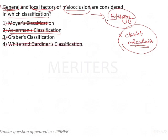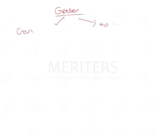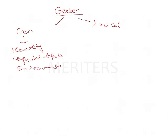The answer is Graeber's classification. Graeber was the one who classified the etiology of malocclusion as general factors and local factors. Under general factors, many of the factors overlap with Moyers' classification, such as heredity, congenital defects, and environmental causes — which can again be prenatal or postnatal.